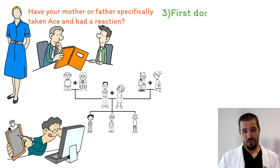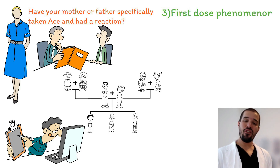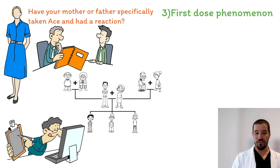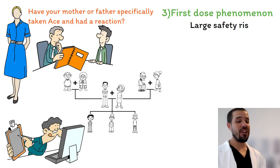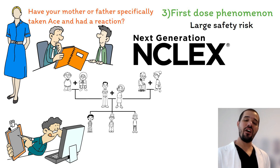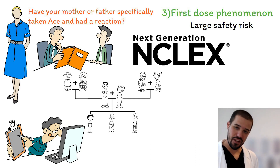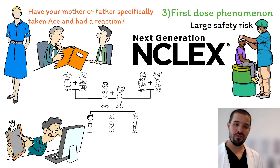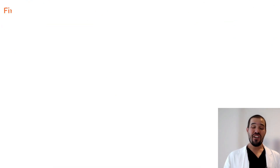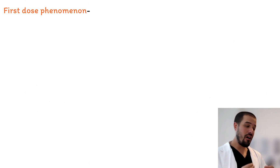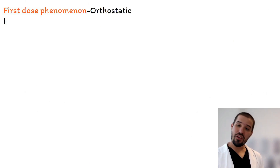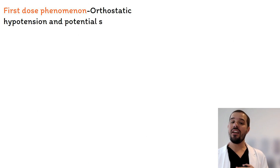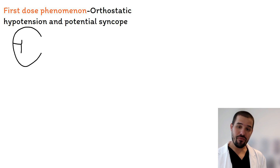Our third side effect is the first dose phenomenon, and as indicated by the asterisks and capitals, this is another large safety risk. NCLEX loves to test for safety concerns — they want to make sure you are a safe and effective nurse. First dose phenomenon is associated with profound orthostatic hypotension and potential syncope.